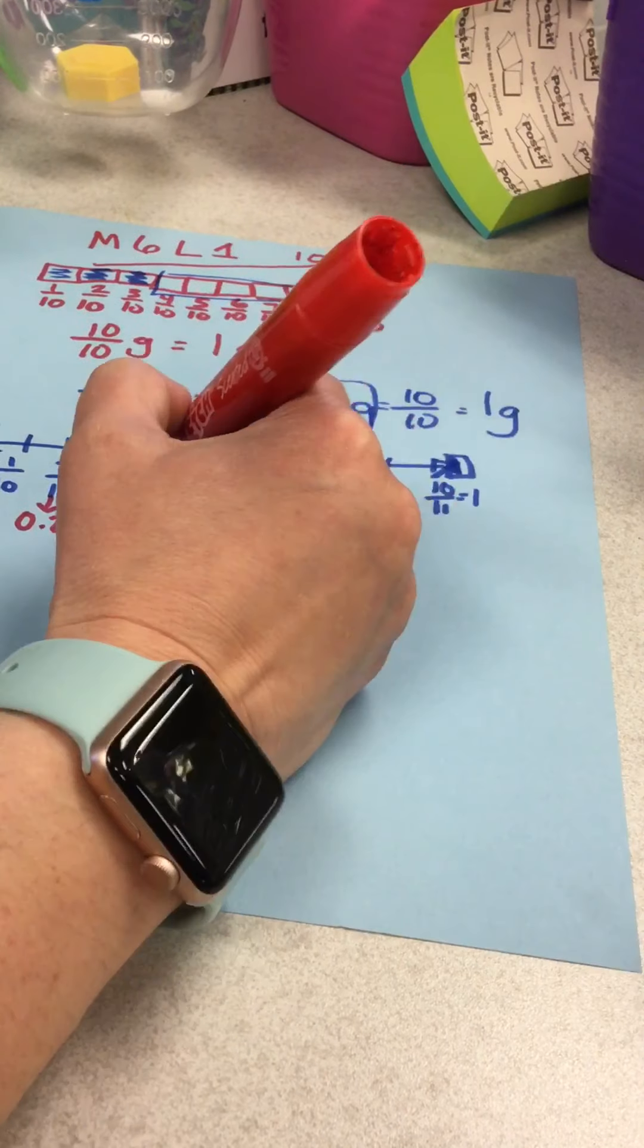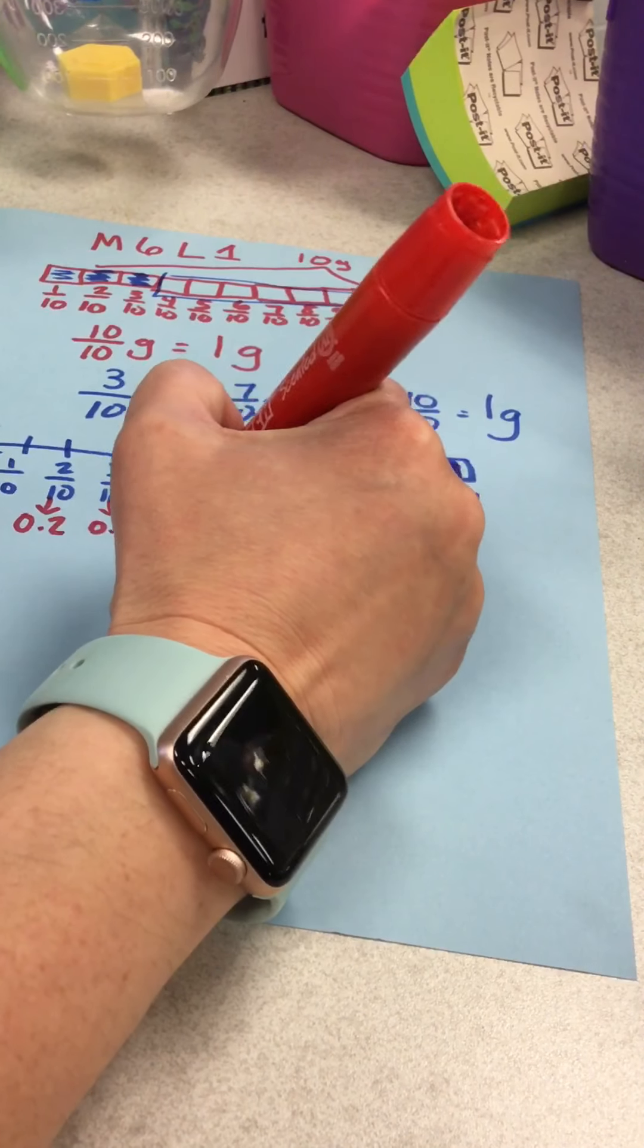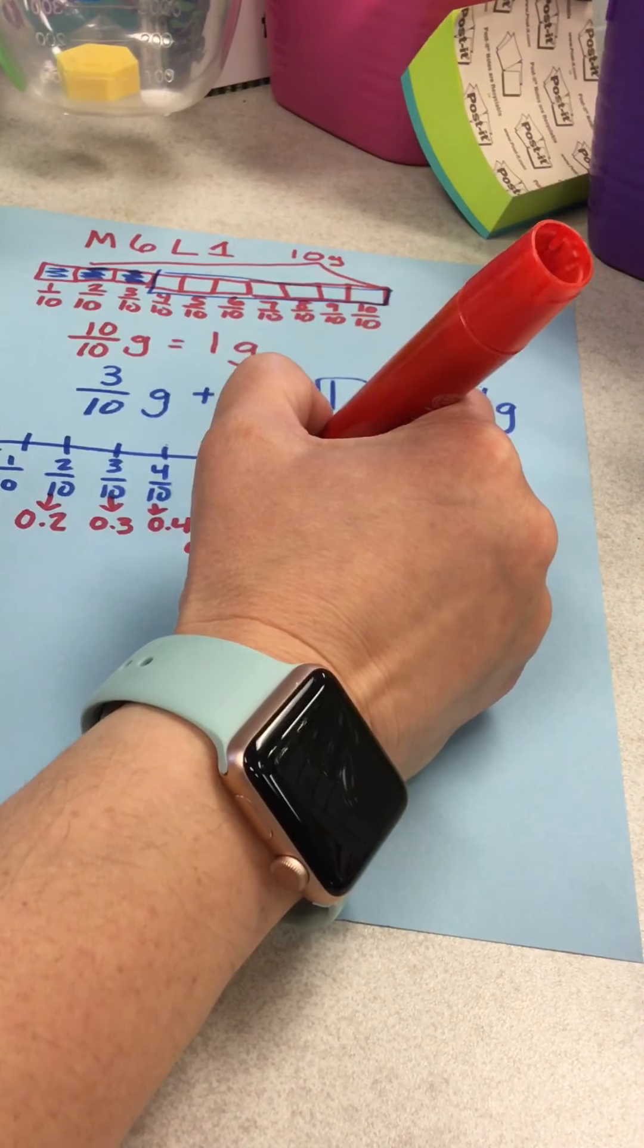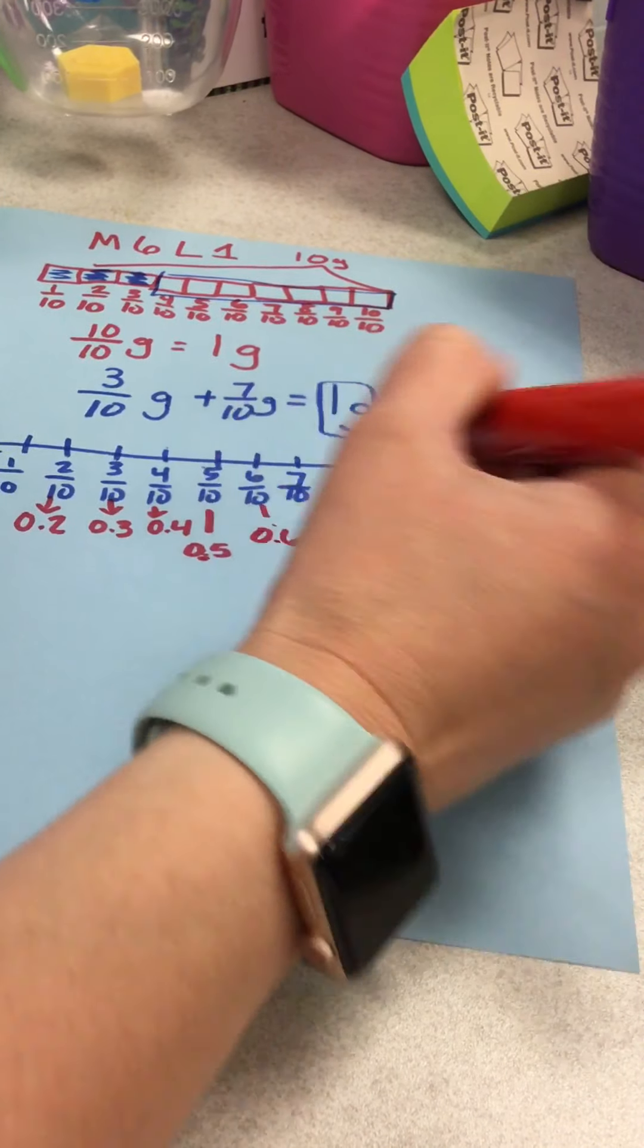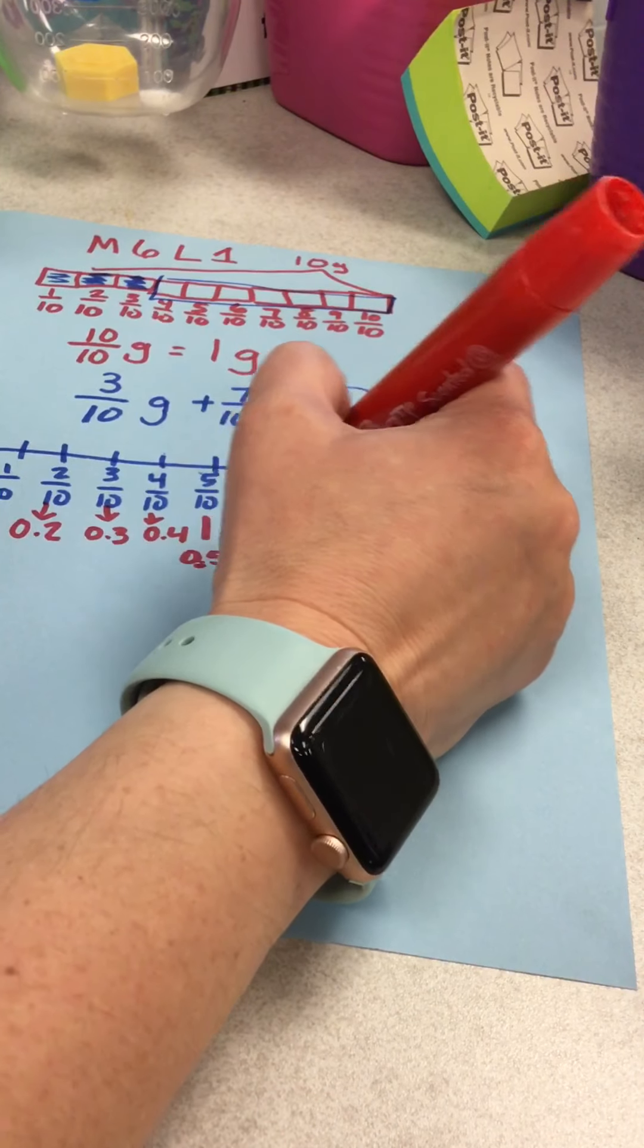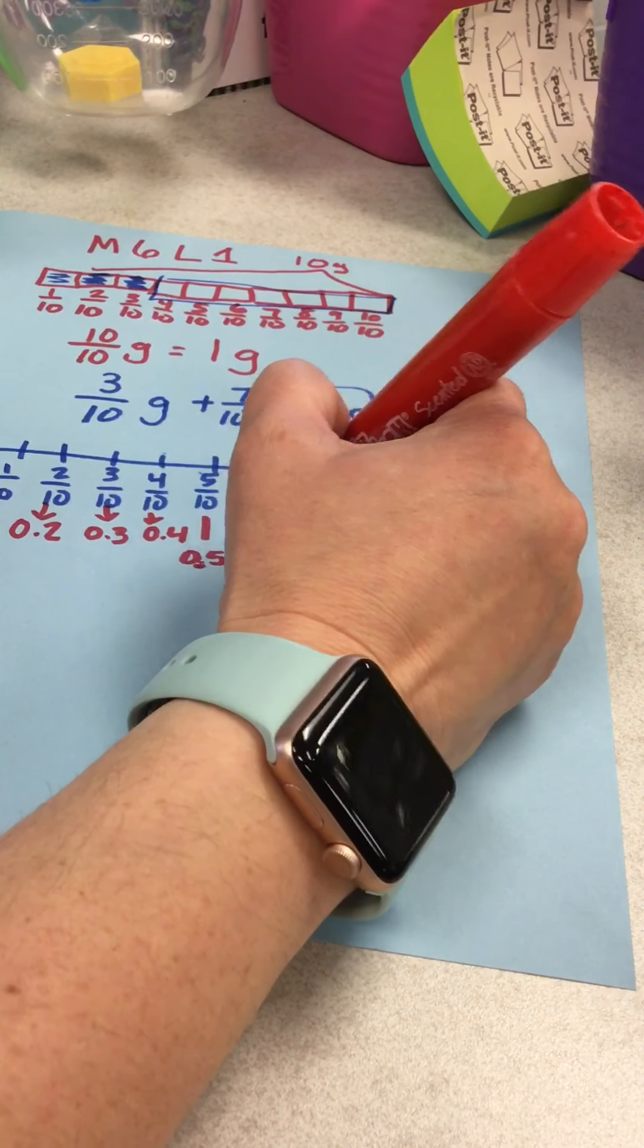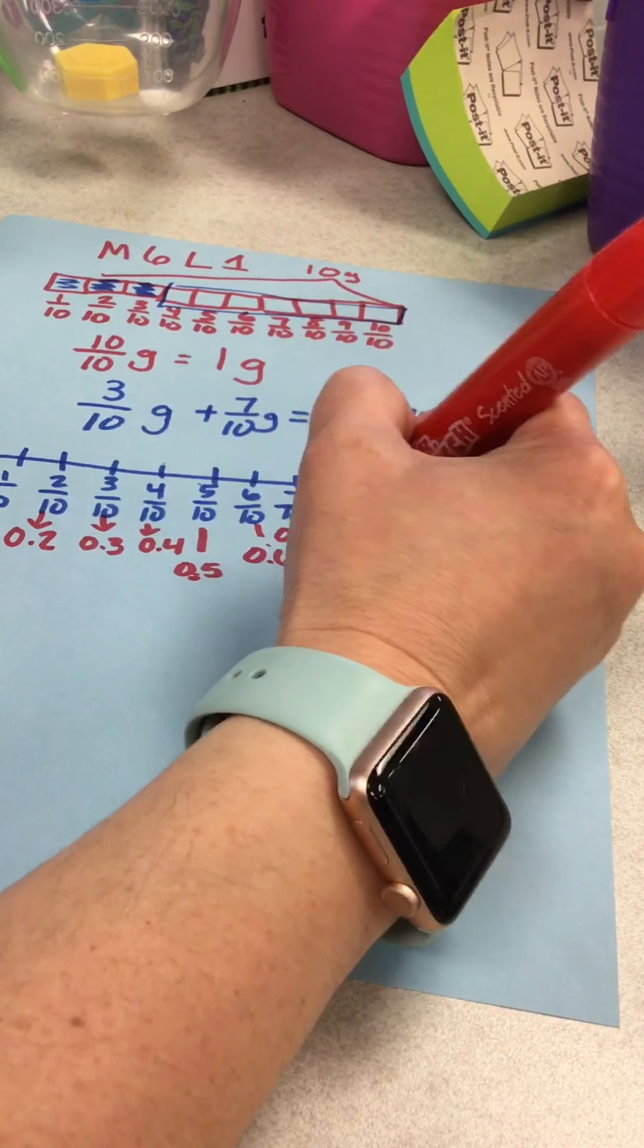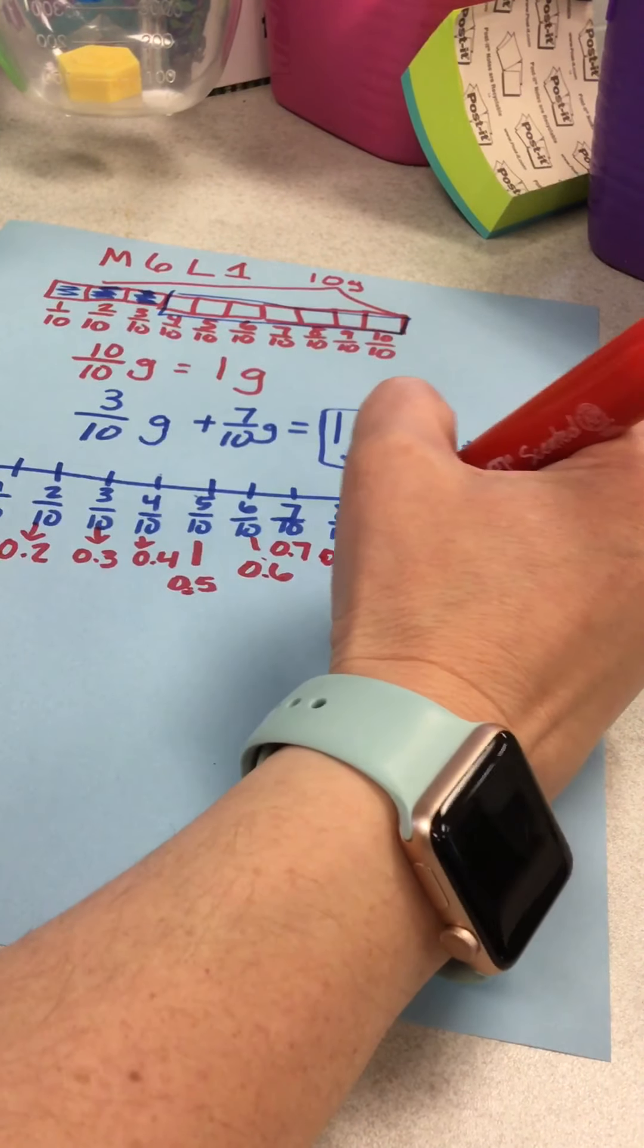Six tenths, zero point six. Seven tenths, zero point seven. Eight tenths, zero point eight. Nine tenths, zero point nine.